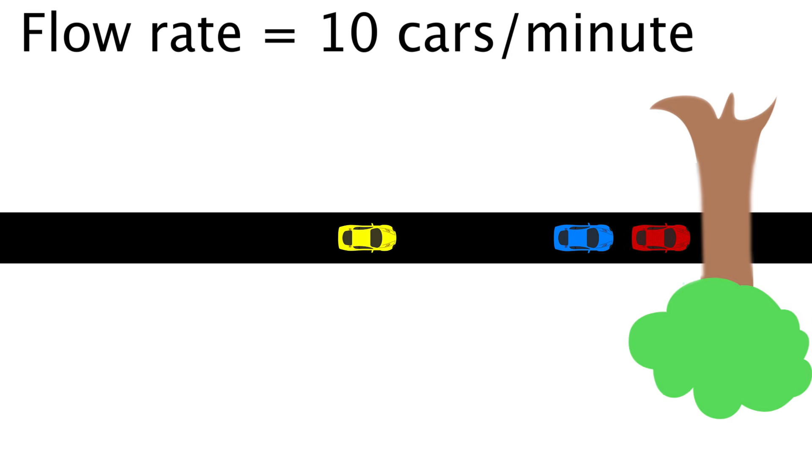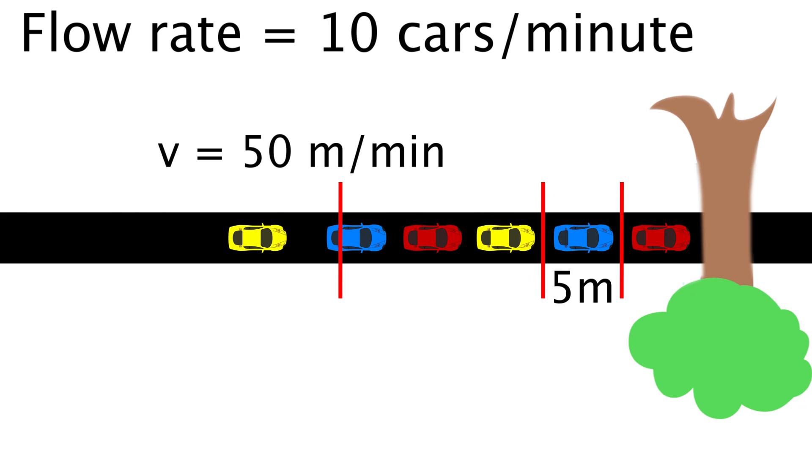Then let's say on average, the cars are spaced 5 meters apart as they sit in the traffic jam. This means the physical line of cars is increasing at 50 meters per minute. Now, once the tree is removed, what happens?